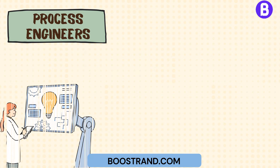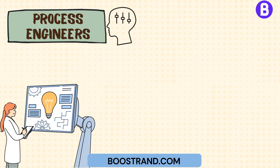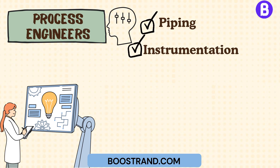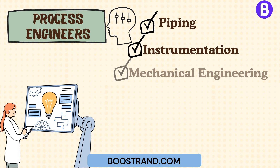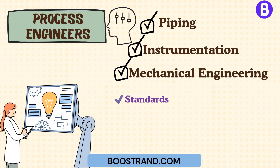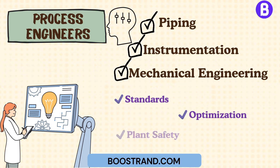As the backbone of a project, process engineers collaborate closely with various disciplines, including piping, instrumentation, and mechanical engineering. Their primary objective is to ensure environmental standards, profitability goals, and safety.